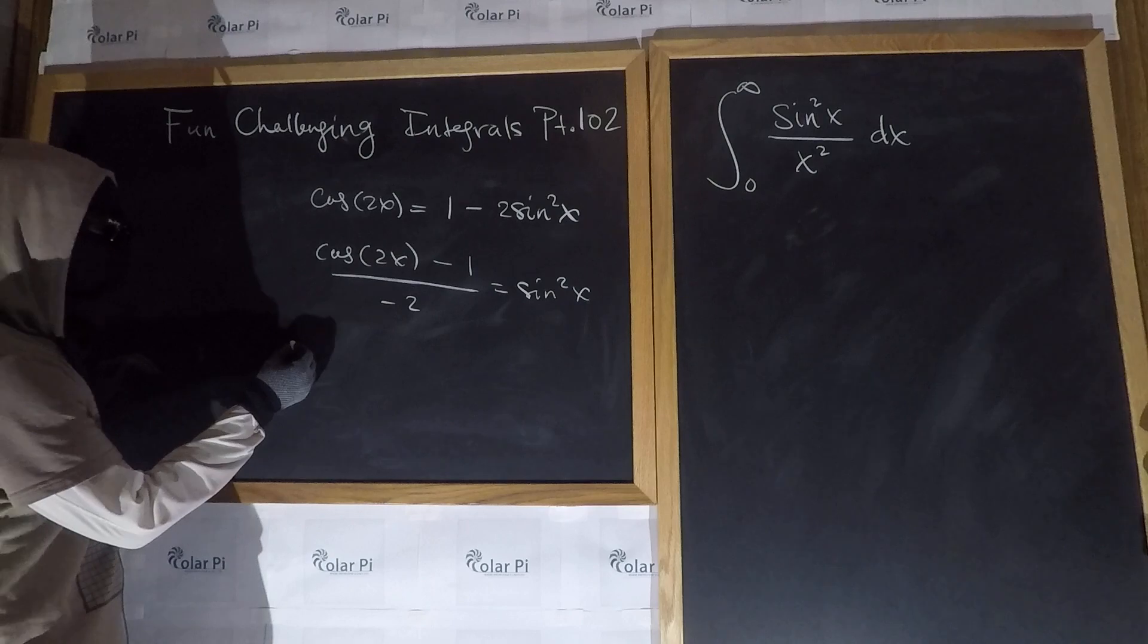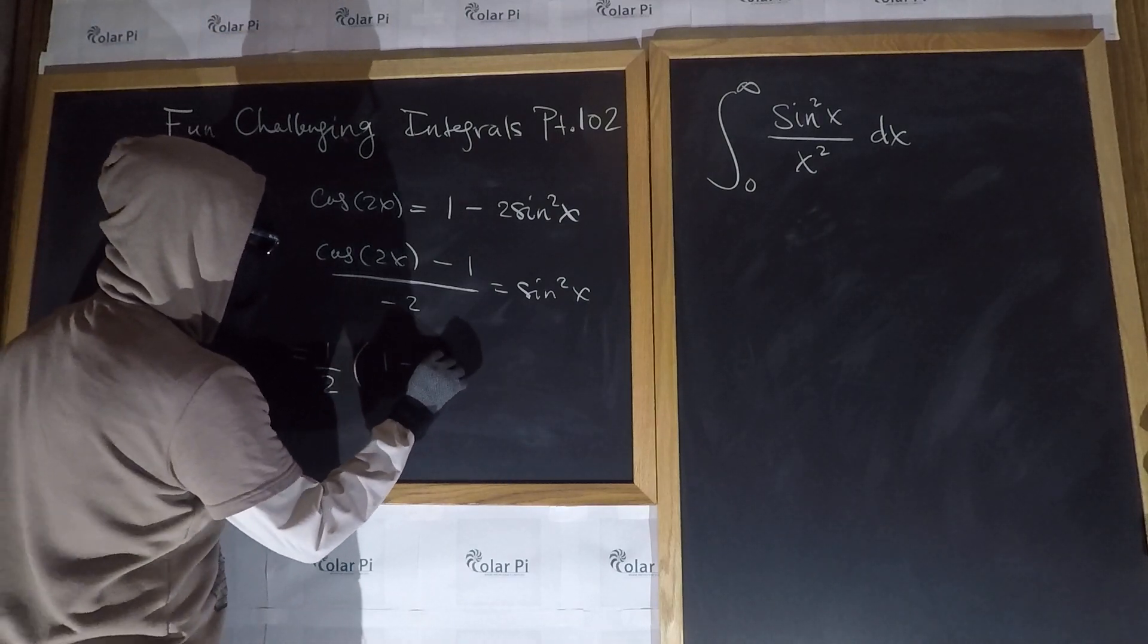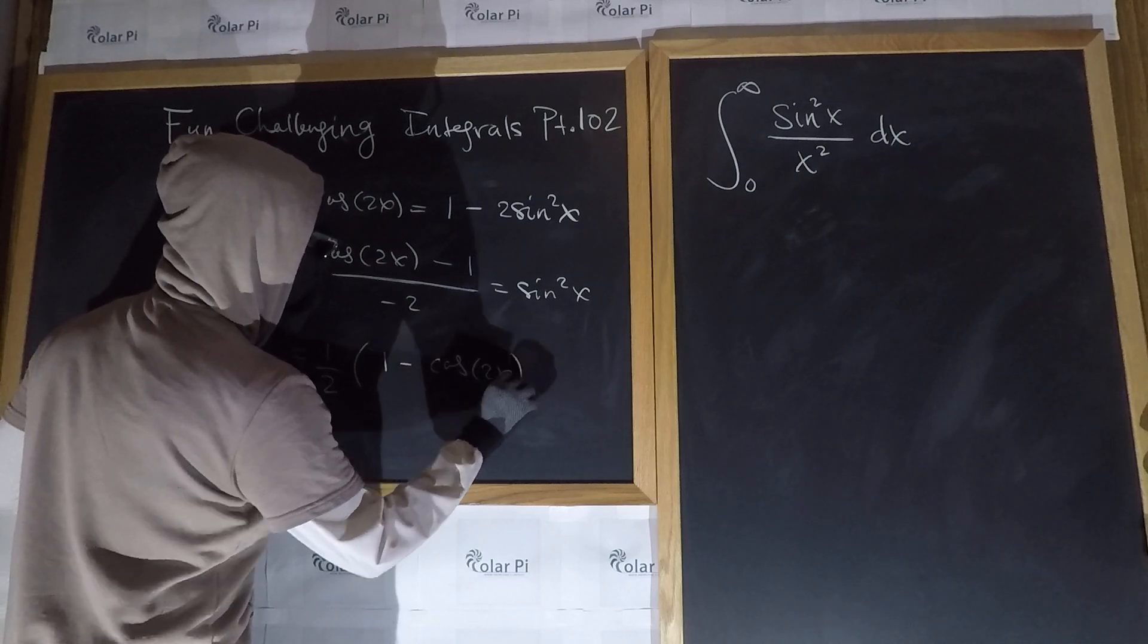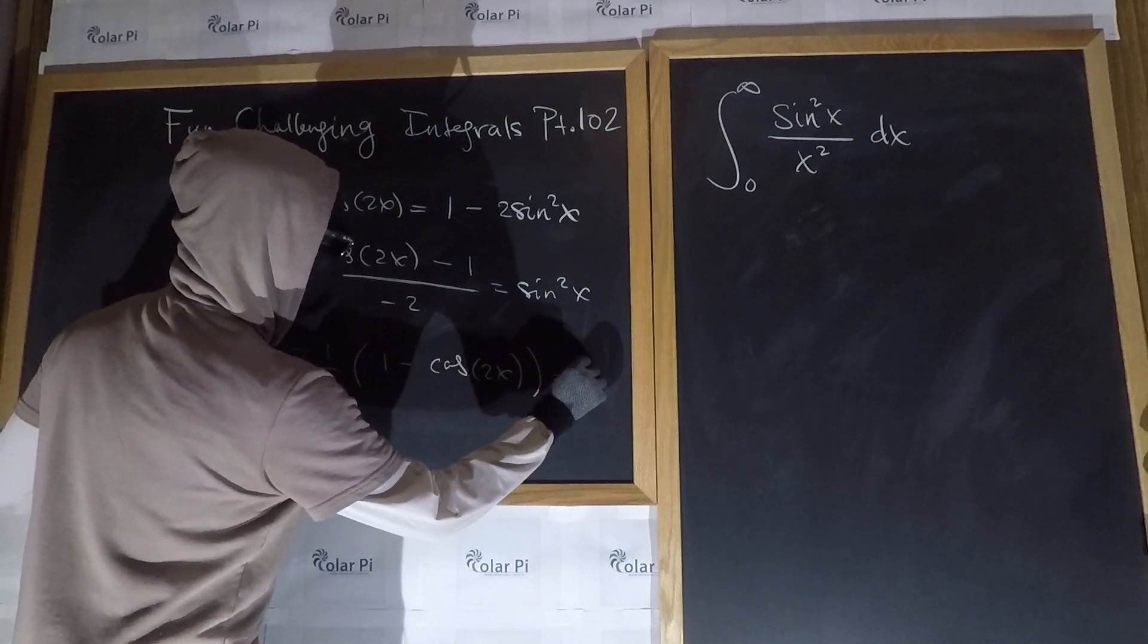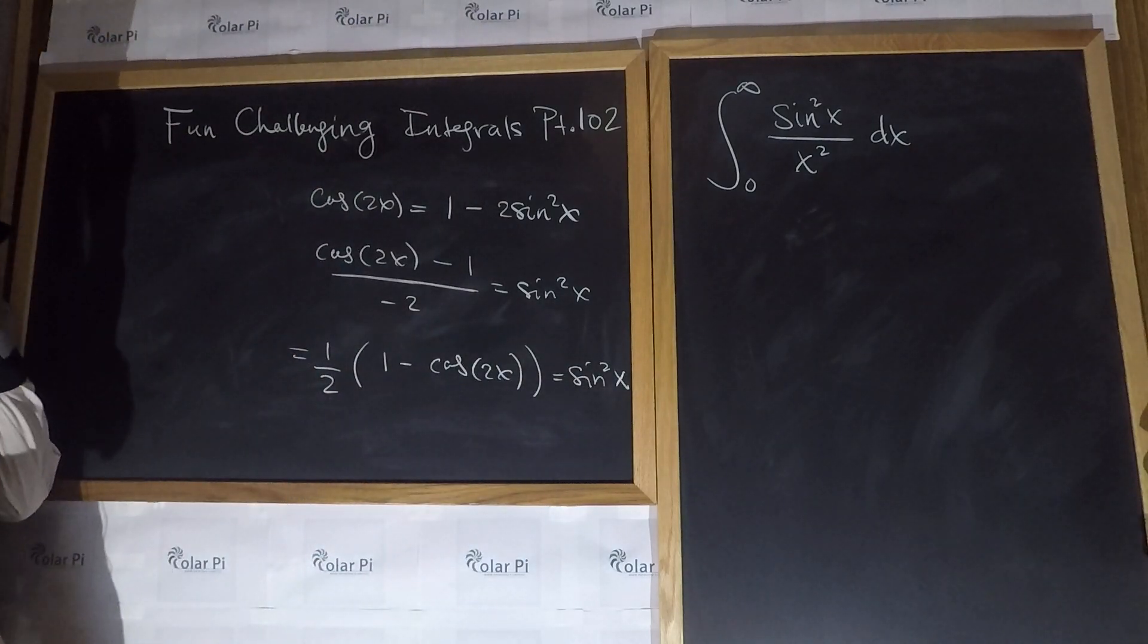but wait, this is the same as writing 1 half times 1 minus cosine 2x equals sine squared x. Right? Okay, cool, cool, cool.